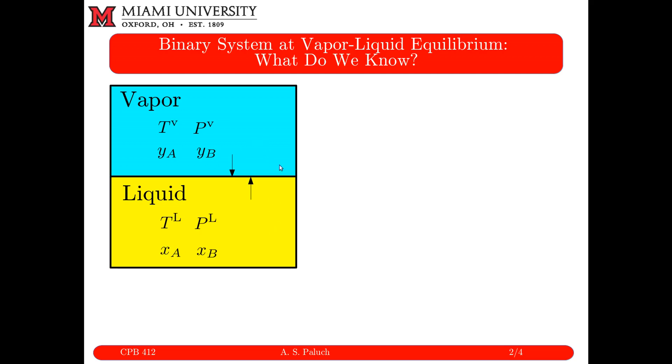So if I have these two phases in vapor-liquid coexistence, the first question is what do we know? Well, we have a mixture, and mole fraction is something we haven't needed when we talked about pure components. But I define my mole fraction as being the moles of that species relative to the total moles in that phase. So yA would be the moles of A in the vapor relative to the total number of moles. Our mole fractions have to sum to one.